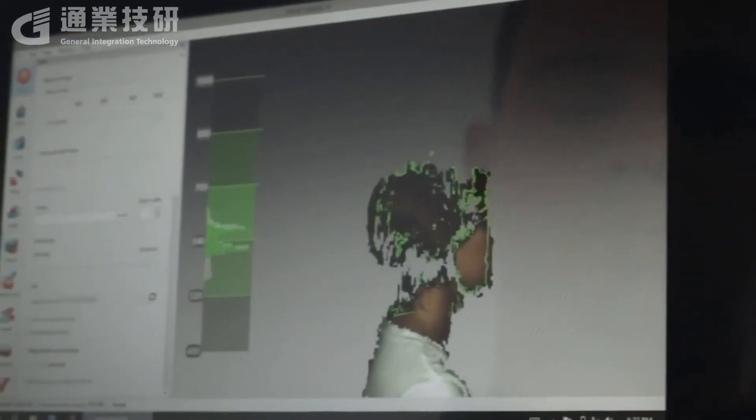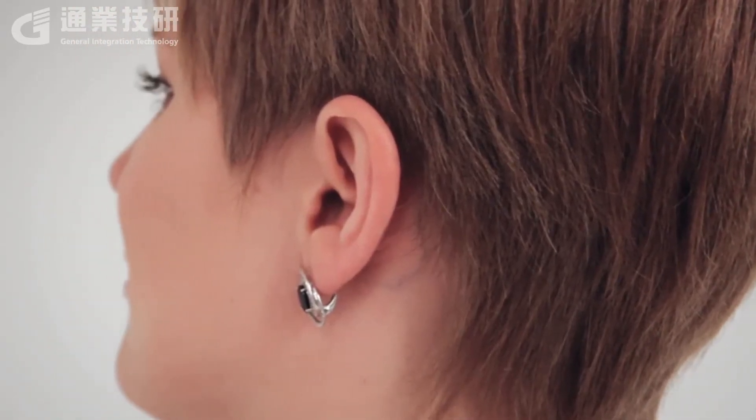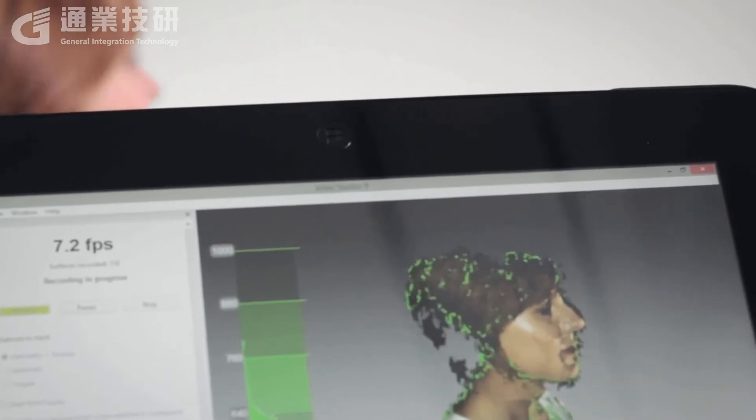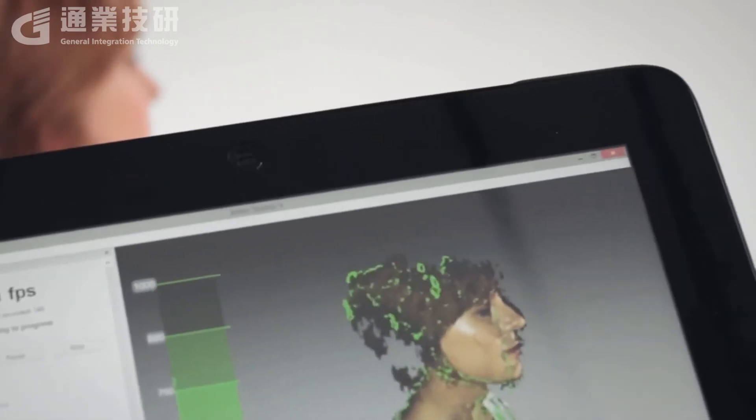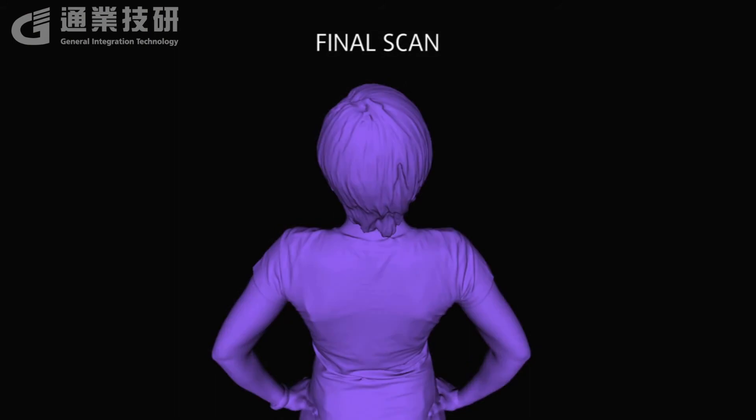Initially, your scan might look like it contains holes and that there's not enough data to recreate the surface of the hair, even though your scanning was thorough and your trajectory good. In most cases, everything is fine and you will have collected enough data. The final scan will always look much better than the raw data.